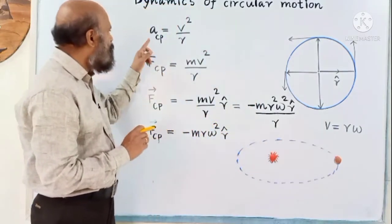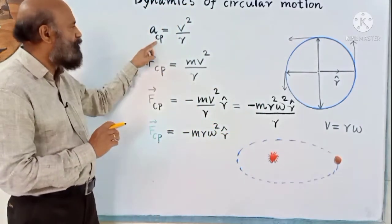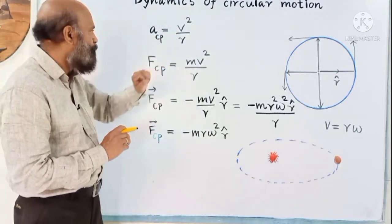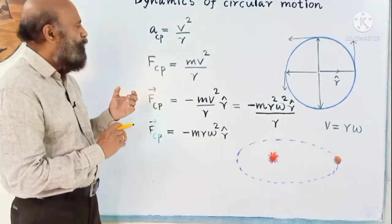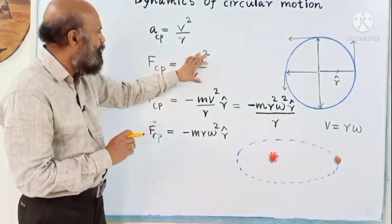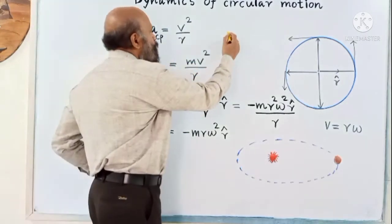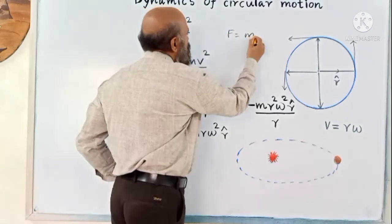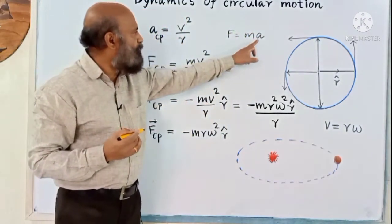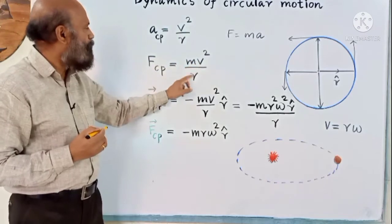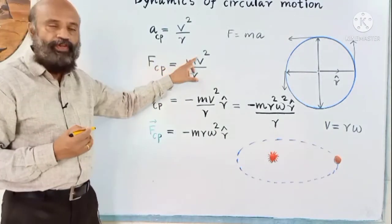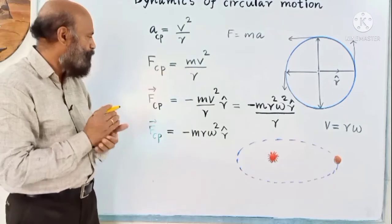The expression for centripetal acceleration is V² / R. Then according to Newton's second law, force is mass into acceleration: F = MA. We can substitute A = V² / R, and since the mass of the particle is M, the centripetal force is MV² / R.